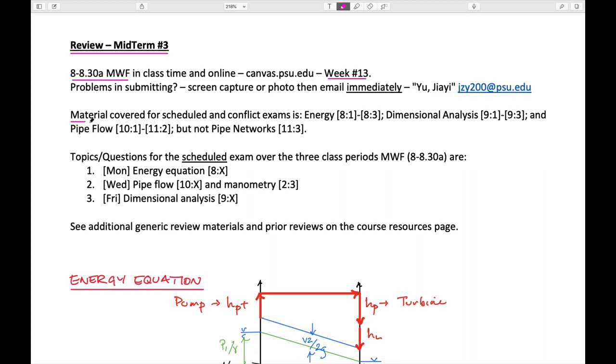The material for this portion of the class is the stuff on energy equation, dimensional analysis of week 9 and pipe flow of weeks 10 and 11. 11-3 is networks but it doesn't include that but it does include type 1, 2 and 3 solutions for flow problems.